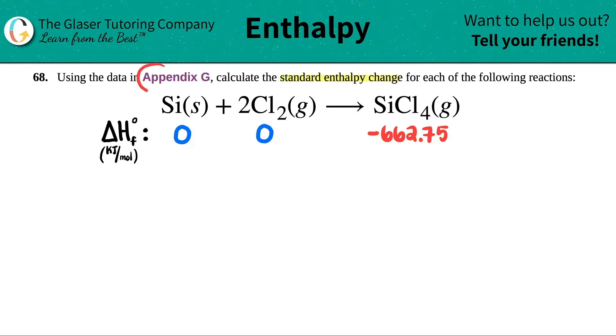Now what I did for you guys is I went into Appendix G and I already wrote out the numbers that you will see in that appendix. You have to take the delta H values for all three of these. And enthalpy, remember, is the heat and that's what H is.